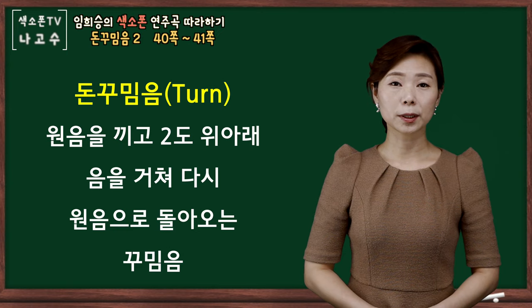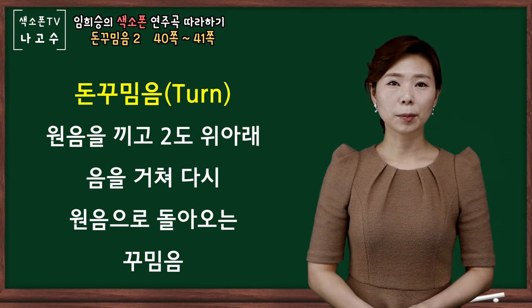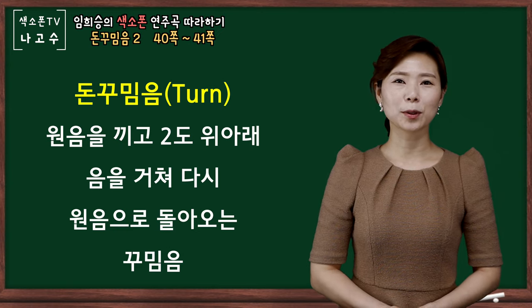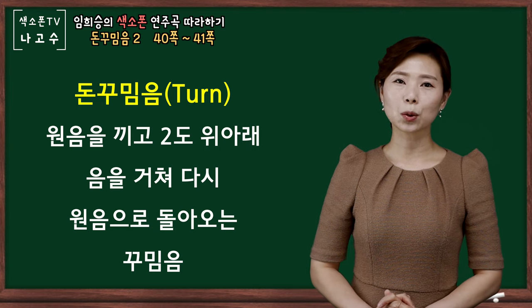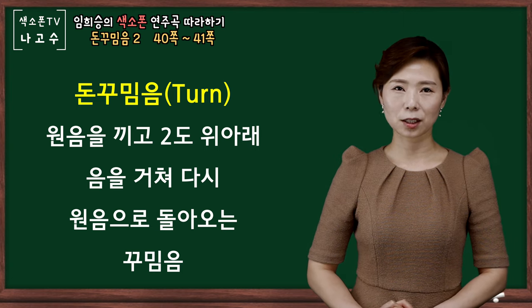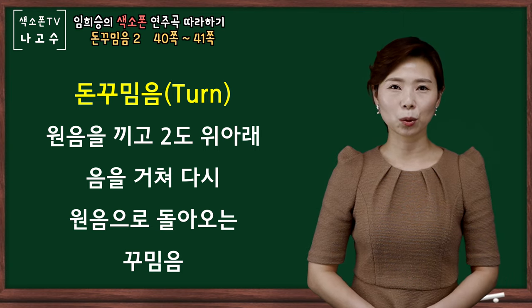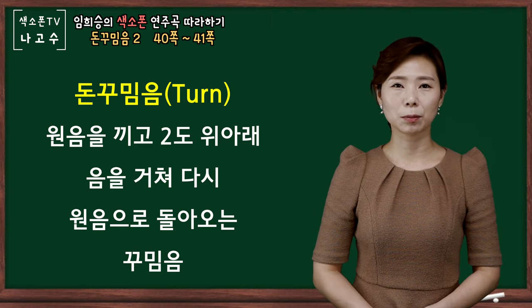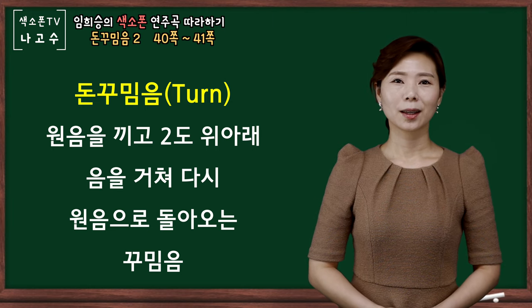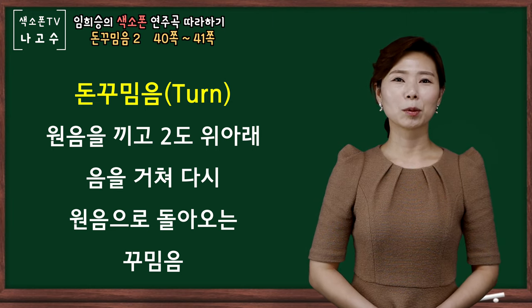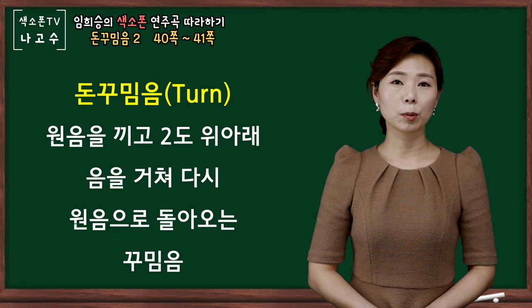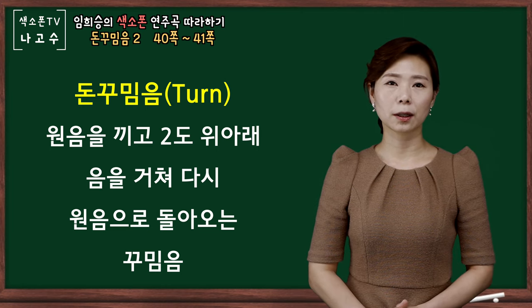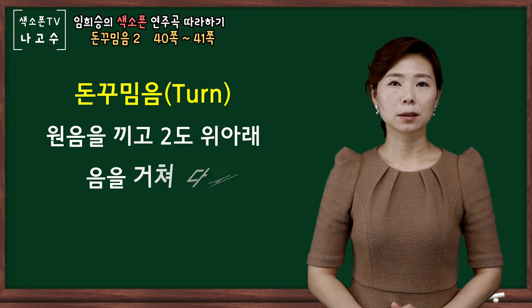돈 꾸밈음은 원음에서 이도음으로 갔다가 다시 원음, 그리고 이도 아래음, 다시 원음으로 돌아오는 꾸밈음의 형태였습니다. 이번 시간에는 돈 꾸밈음 두 번째 시간으로, 지난 돈 꾸밈음 첫 번째 시간에 자세한 설명을 드렸습니다.